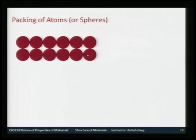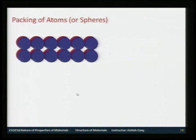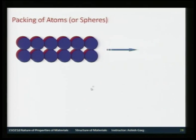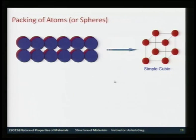If this is the first layer of atoms, the second layer goes right on top of it. I have made it slightly shifted so that it is clear, and the color is different just for illustration purposes — otherwise both layers are similar. This makes a simple cubic structure where atoms are located at 0,0,0 positions.